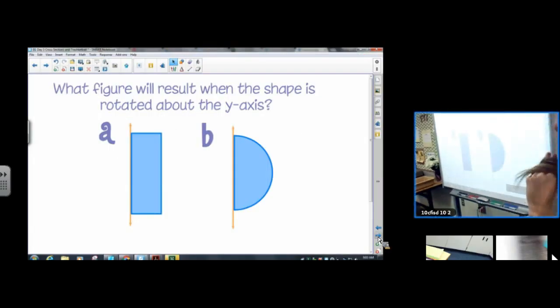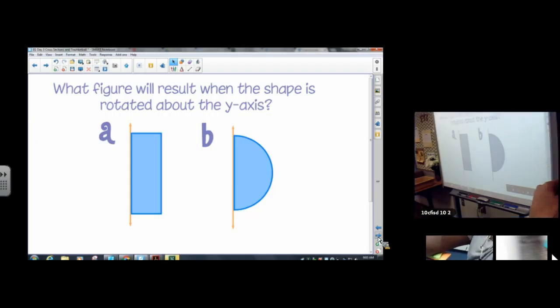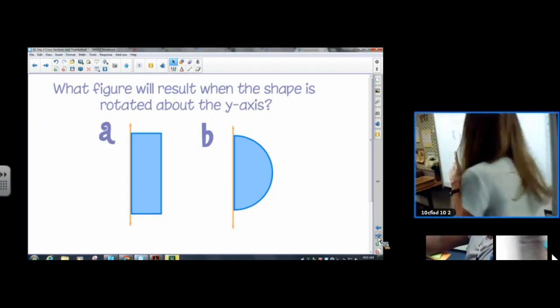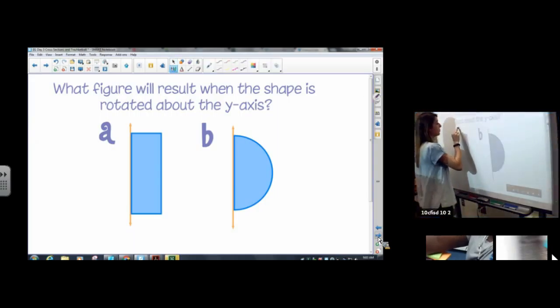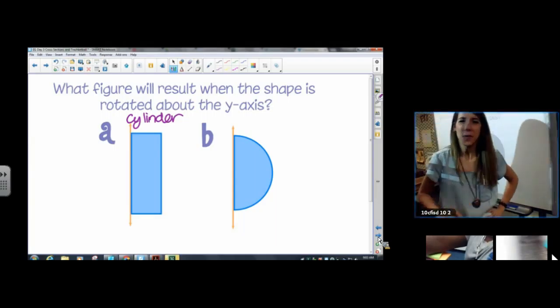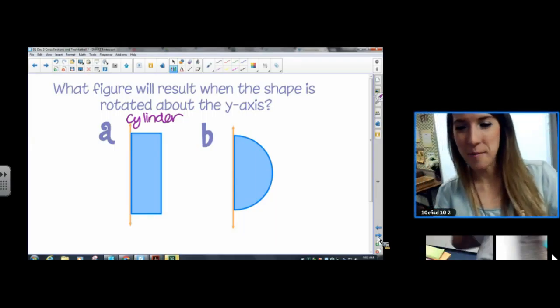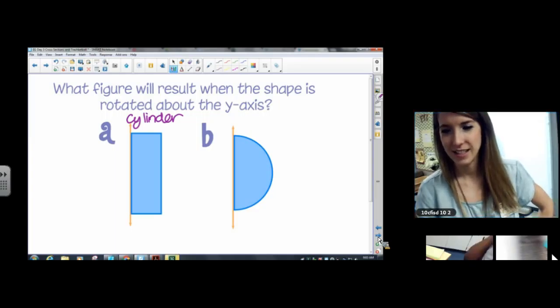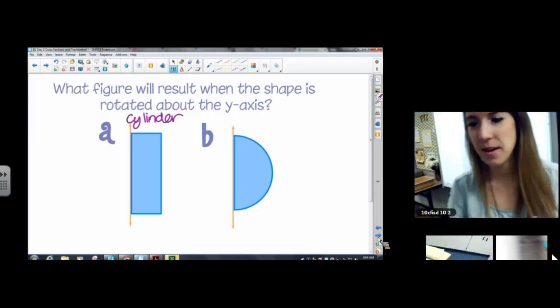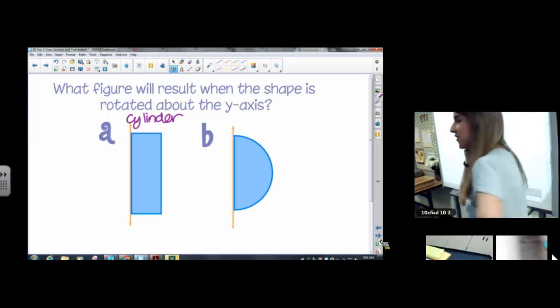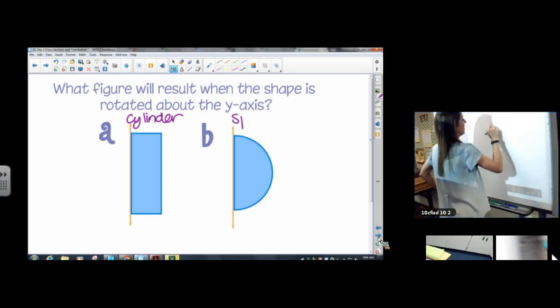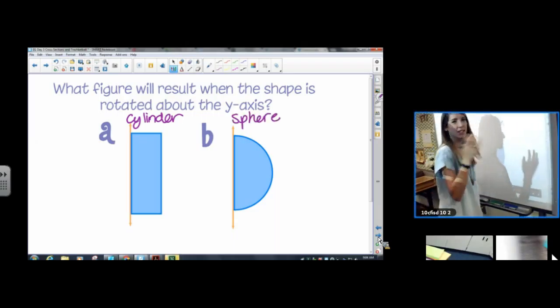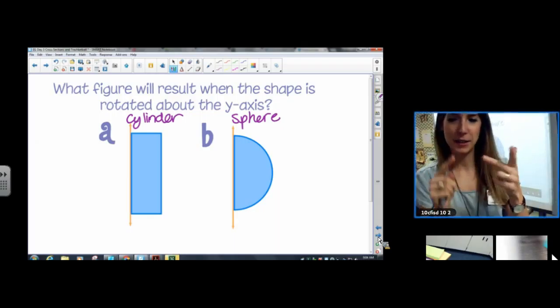What figure will result when this shape is rotated about the y-axis? So we kind of already did this through exploration. What do you get for A? We didn't try B. What happens when you rotate the semicircle about our axis? What do you get? Sphere. Very good. So do you notice that all of our answers involve a circle, cone, cylinder, sphere?